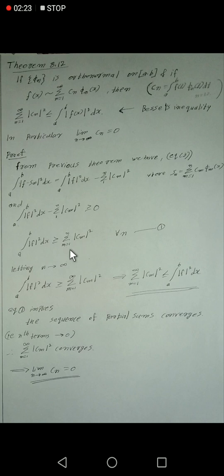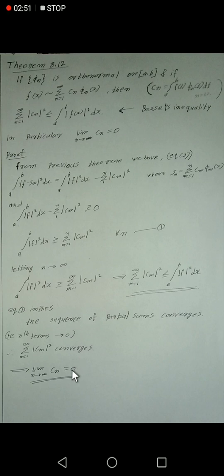Now, since σ from m=1 to infinity of |cₘ|² converges, its partial sums converge. A convergent series has terms that form a sequence converging to 0. That is, since σ from n=1 to infinity of |cₙ|² converges, the sequence cₙ converges to 0 — that is, limit as n tends to infinity of cₙ equals 0.